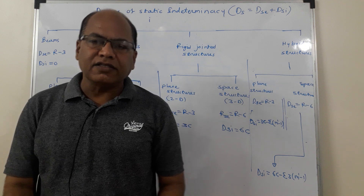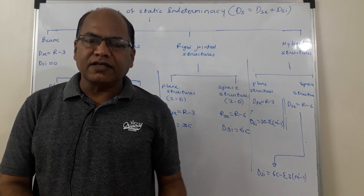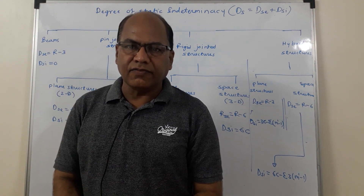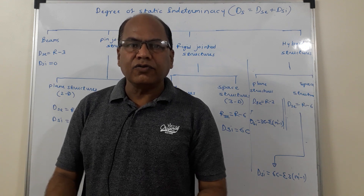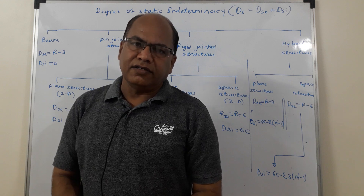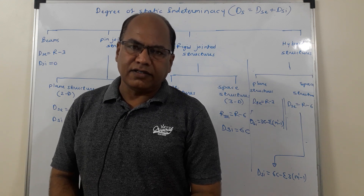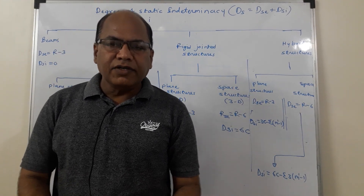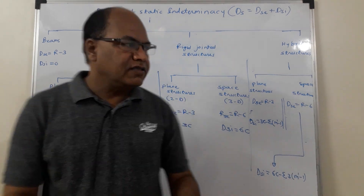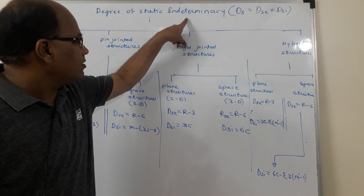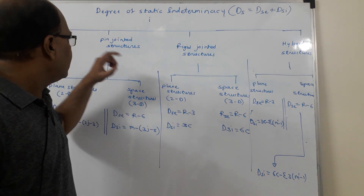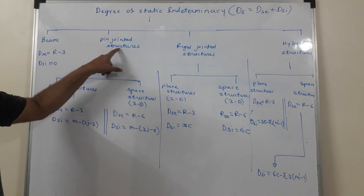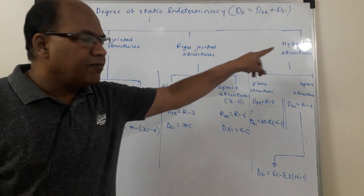Pin-jointed structures are further classified into 2D (plane) structures and 3D (space) structures, and so are rigid-jointed structures — classified into plane rigid-jointed and space rigid-jointed structures. However, for the purpose of determining static indeterminacy using a convenient method, I am classifying structures into four types: beams, pin-jointed structures, rigid-jointed structures, and hybrid structures.